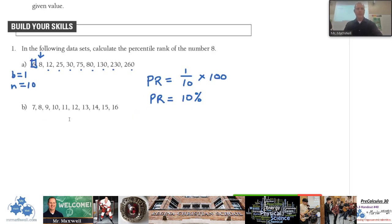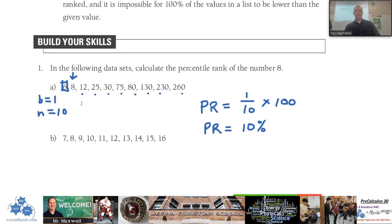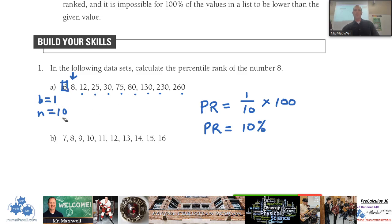Now for Build Your Skills question one: in the following data set, calculate the percentile rank of the number 8. The number 8 is right here in the list, and these numbers are already ordered from least to greatest. Once I find 8, I count the numbers less than 8 — there's just one number less than 8. So my B value is 1. The total count is 10. So the percentile rank equals 1 divided by 10 times 100, which gives a percentile rank of 10.